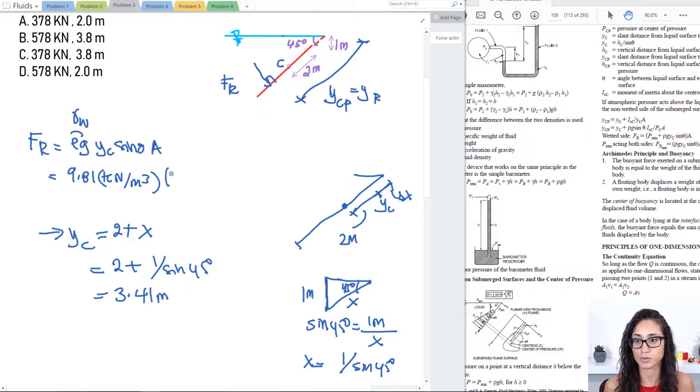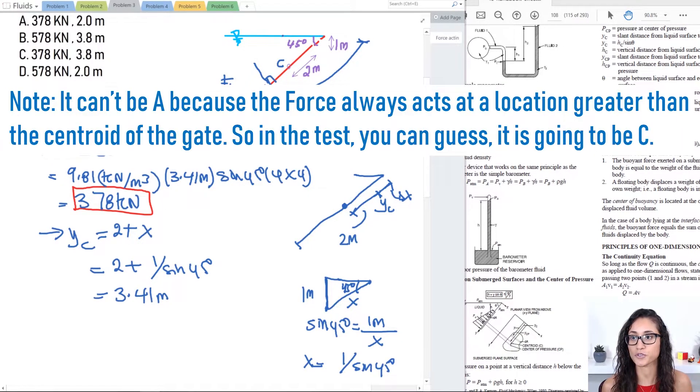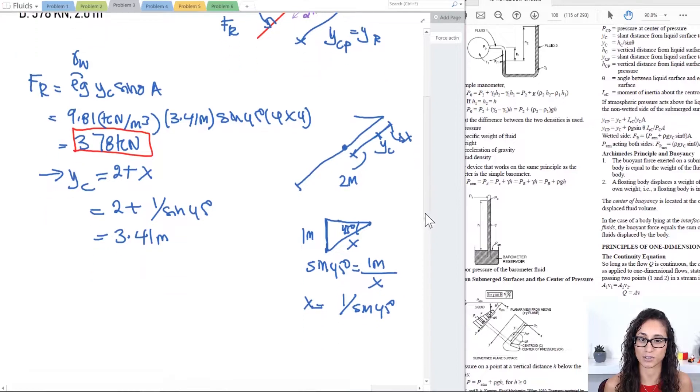So I have 3.41 meters, I have sine of 45 times the area which is 4 times 4. Now if you plug this in you'll get an answer of 378 kilonewtons. So if you go back to your multiple choice, we already know it's going to be either A or C but we still need to calculate the location.